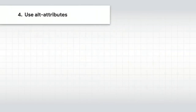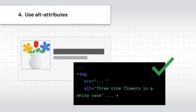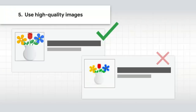Use alt attributes. Alt attributes are a way to provide information about the image to users who can't see the images — this is good for accessibility as well as for search engines. Use high quality images. High quality images appeal to users more than blurry, unclear, low-resolution images. Sharp images are often more appealing in the result thumbnail and increase the likelihood of getting traffic from users.